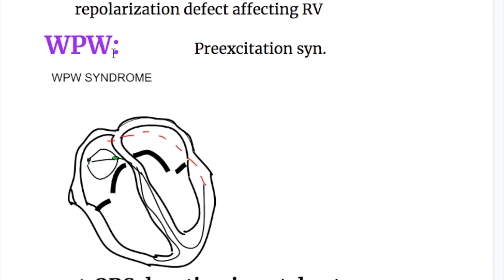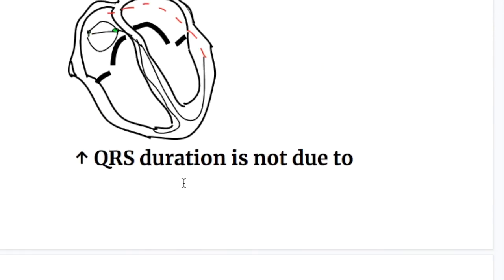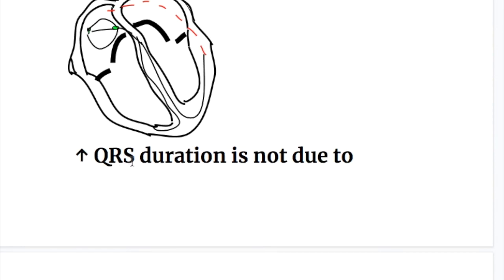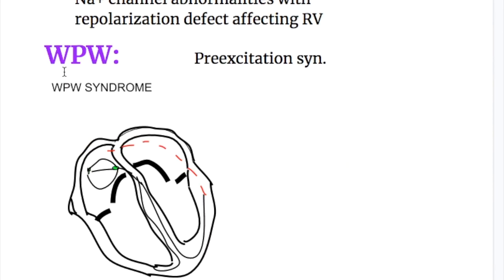And what happens in Wolff-Parkinson-White syndrome? In Wolff-Parkinson-White syndrome, the QRS duration is prolonged, but it's not due to the conduction delay. Wolff-Parkinson-White syndrome is a pre-excitation syndrome. An abnormal excitation center is formed in the myocardium that does not pass through the AV node. Normally, the impulse when it's generated from the SA node goes to the AV node. But in this case, it's generated at some other point other than the SA node and it doesn't go through the AV node. Instead, it bypasses that and then it excites the ventricles.